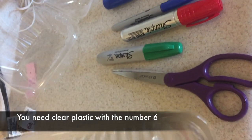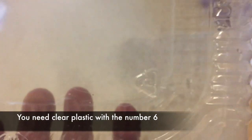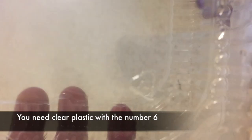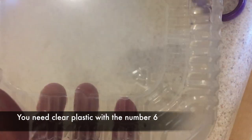As you see here, I just got some to-go containers, and they have the number six recycling number on there. That's what you're looking for is the number six. They're also in yogurt, Dannon yogurt containers. You can look, they have number sixes too.